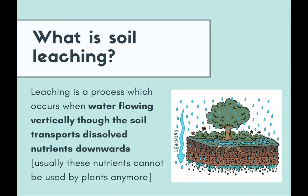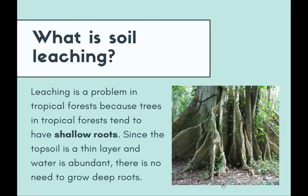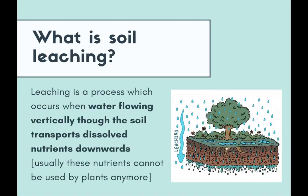To repeat: leaching is the vertical downward movement of water through the soil, which dissolves nutrients and brings them downwards away from the roots of plants. Recalling from last week's lecture, the topsoil — the layer with the most nutrients — is a very thin layer in tropical forests because there are many plants taking up nutrients very quickly. Also, tropical forests receive a lot of rainfall, so there's no need for trees to grow very deep roots. Generally in tropical forests, trees have very shallow roots. When leaching happens, it can easily bring dissolved nutrients away from the roots and contribute to the loss of nutrients.